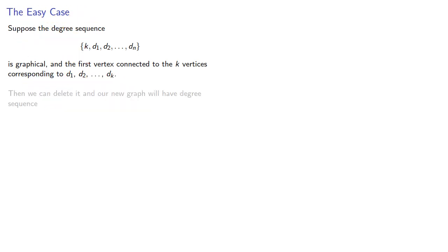Then we can delete it, and our new graph will have the following degree sequence. The first k terms will be reduced by 1, while the rest stay the same. Since this is the actual degree sequence of the new graph, it will also be graphical.